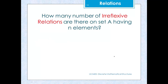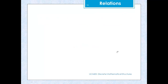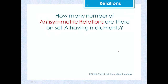Some counting questions: How many irreflexive relations are there on set A having N elements? The answer is 2 raised to the power N(N−1). How many asymmetric relations are there on set A having N elements? The answer is 3 raised to the power N(N−1)/2. And how many antisymmetric relations are there on set A with N elements? The answer is 2^N × 3^(N(N−1)/2). These are left as exercises.